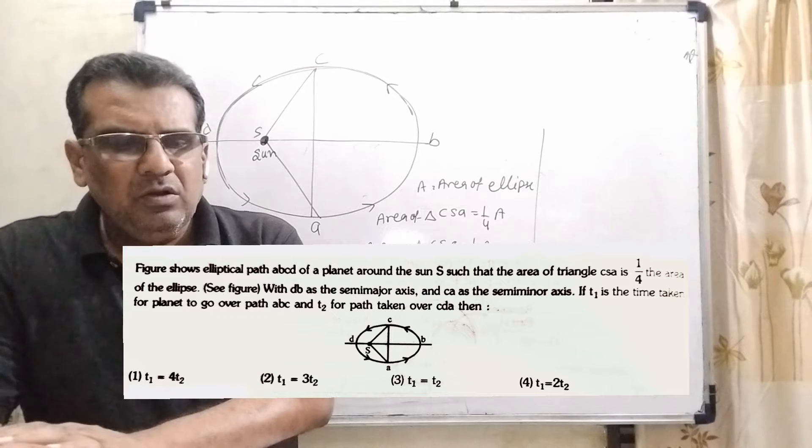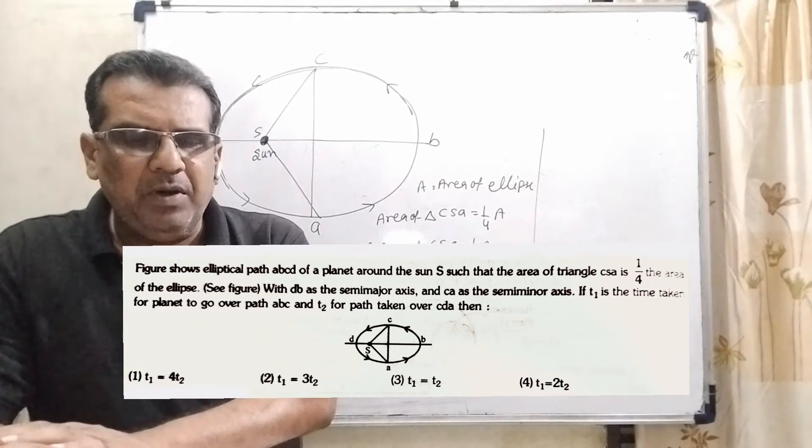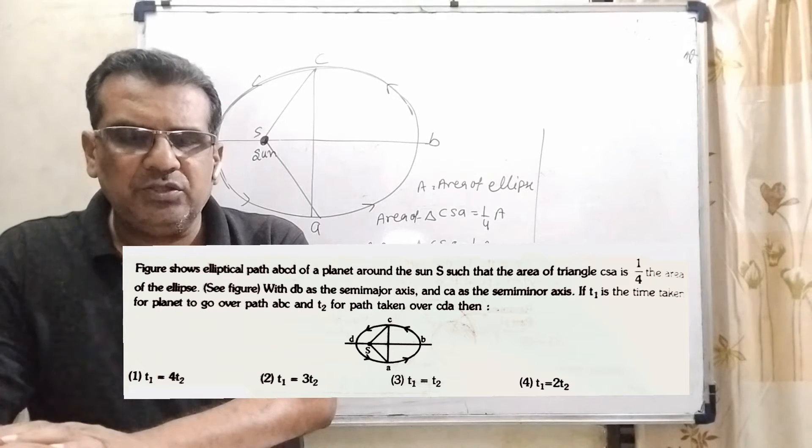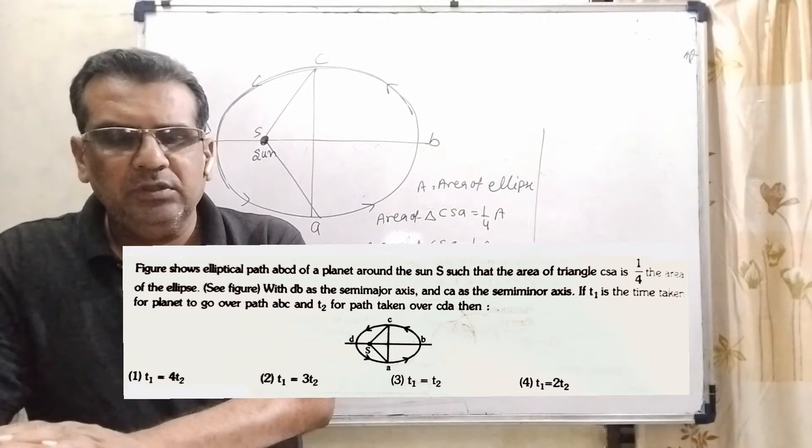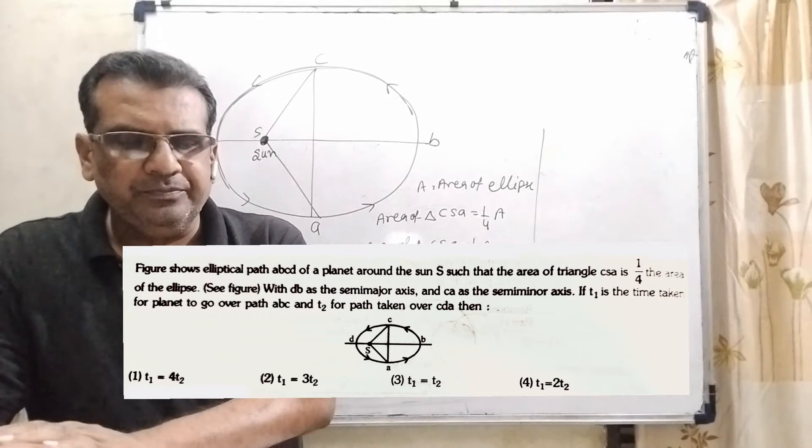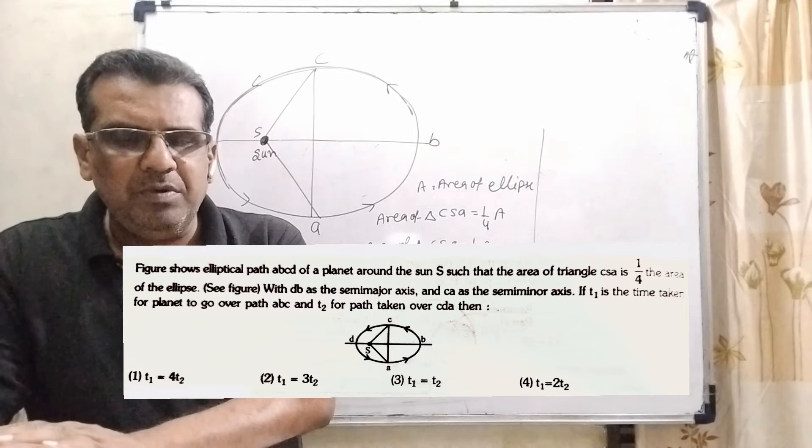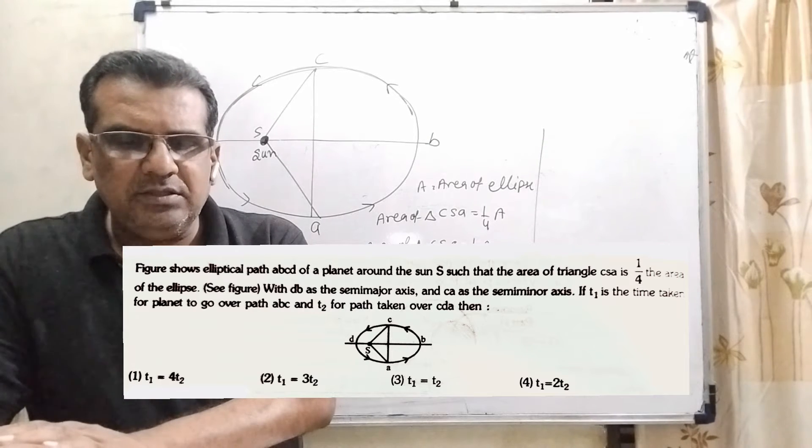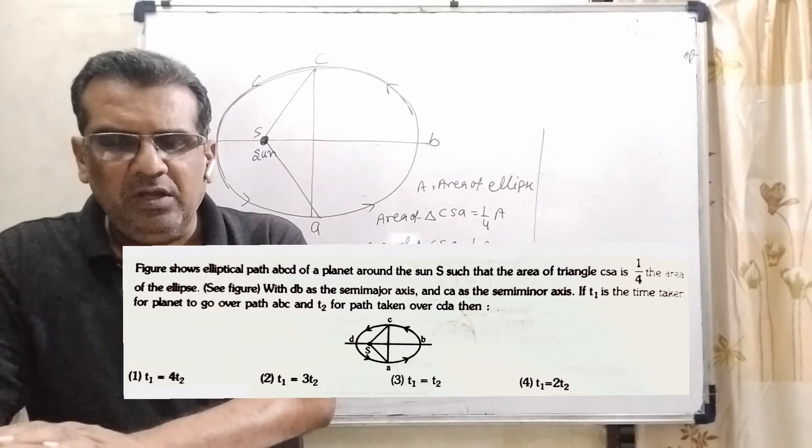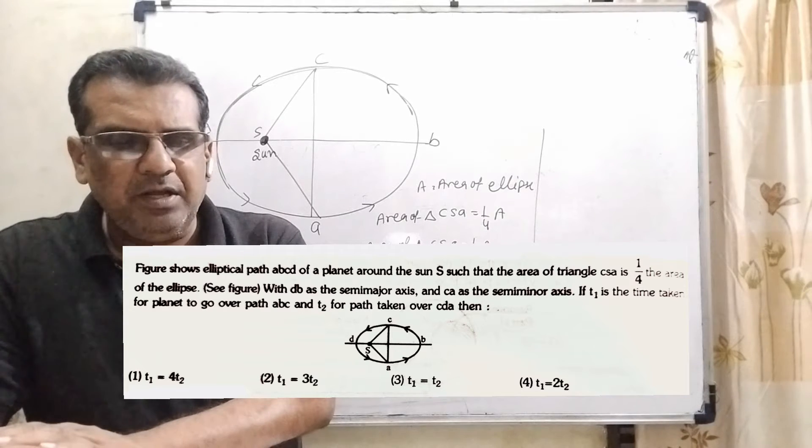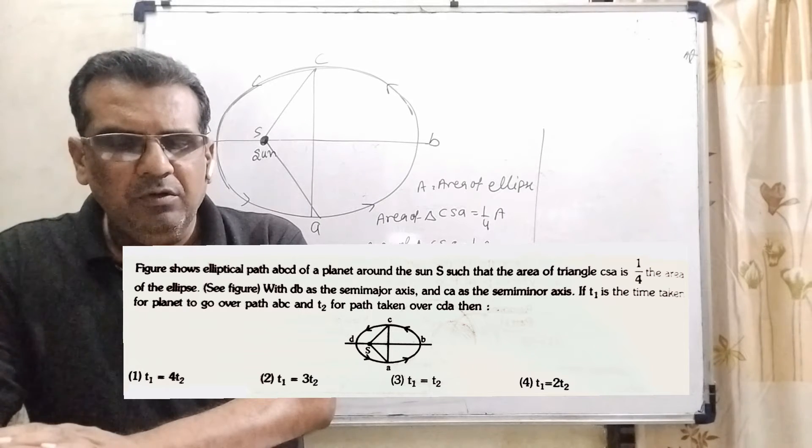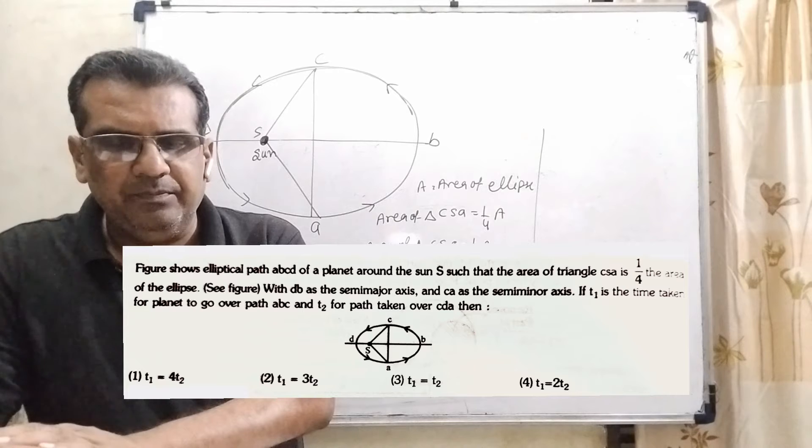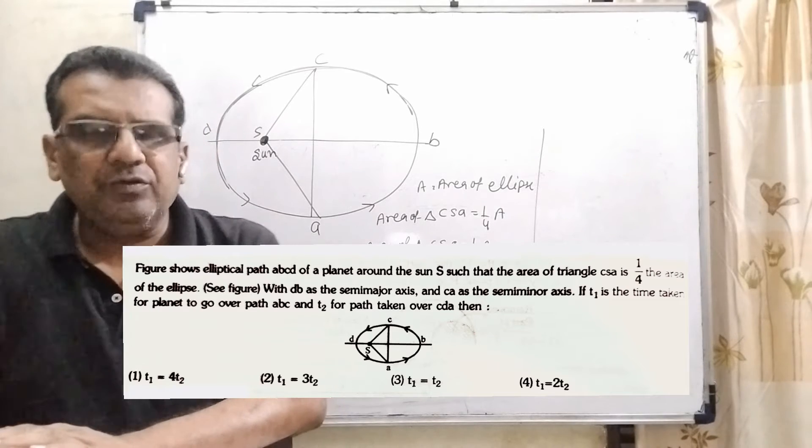Now here is the question. Figure shows elliptical path ABCD of a planet around the Sun such that the area of triangle CSA is 1/4th area of the ellipse. With DB as the semi-major axis and CA as the semi-minor axis. If T1 is the time taken for planet to go over path ABC and T2 for path taken over CDA, then we have to give 4 options.